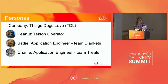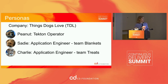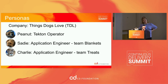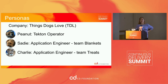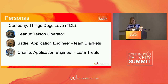For the purpose of this talk, we have this company called Things Dogs Love. Things Dogs Love has three team leads. One of them is Peanut, and he's our Tekton operator. Sadie is an application engineer on the Blankets team, and Charlie is an application engineer on the Treats team. It's important to note that Charlie really loves to use the advanced features of Docker that are in the experimental areas, so that will come up later.